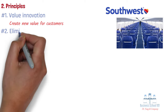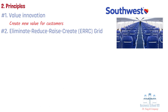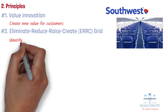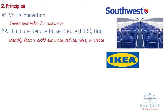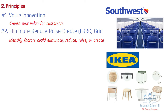Number 2: Eliminate Reduce Raise Create — the ERRC Grid. The ERRC grid is a tool used to help companies identify which factors they should eliminate, reduce, raise, or create to achieve value innovation. By evaluating their current offerings and industry practices, businesses can rethink their approach and develop new strategies to differentiate themselves from competitors. For example, IKEA, the Swedish furniture retailer, utilized the ERRC grid to differentiate itself in the furniture market. IKEA eliminated salespeople and in-store assembly services, reduced product variety, raised the level of customer self-service and flat-pack packaging, and created a unique store layout with model rooms for inspiration. This approach allowed IKEA to offer stylish, affordable furniture in a distinctive shopping environment.